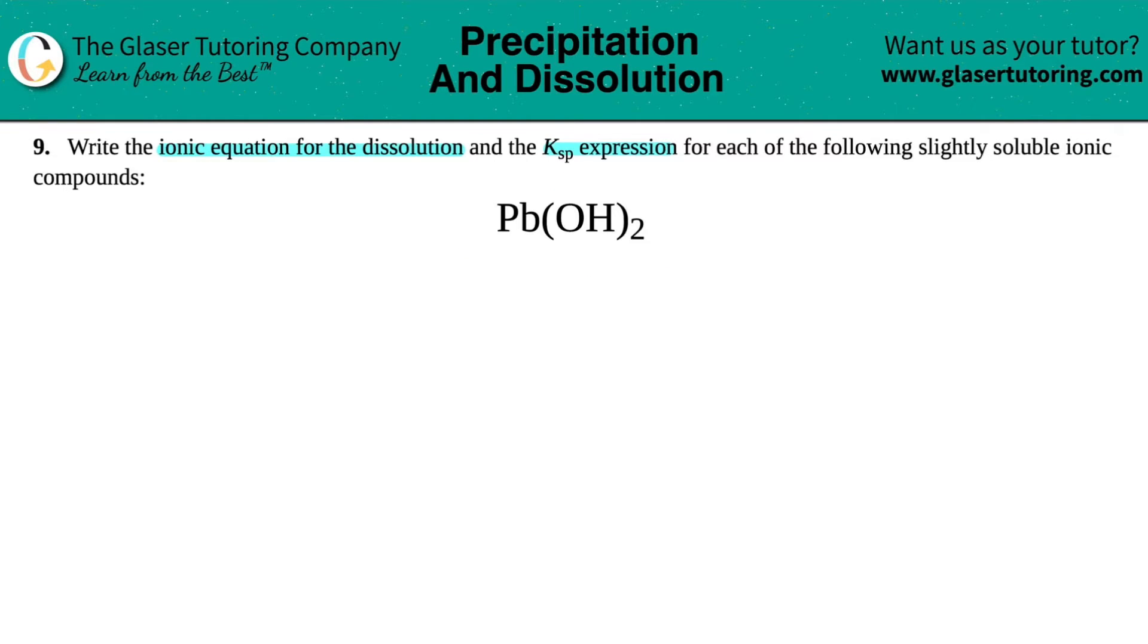All right, so the first thing we have to do is write that ionic equation. We can never get a Ksp expression without an ionic equation or an equation in general. So the first thing I'm going to do is write that equation. Dissolution means that this compound is just dissolving into its ions. So we have to start off with the ionic compound.